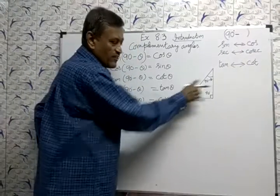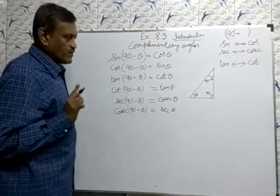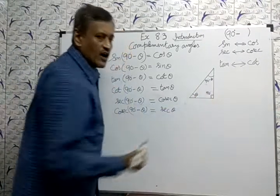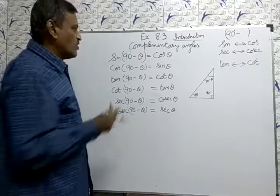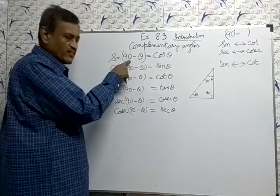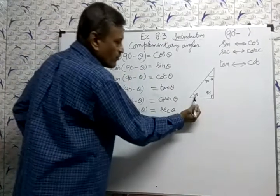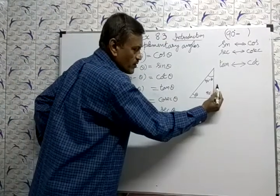Another is 90 minus theta. So complementary angles theta and 90 minus theta are called complementary angles. See here, theta means here 90 minus theta. Everywhere 90 minus theta, theta is coming.